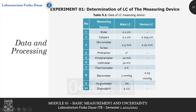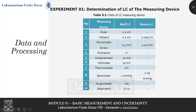For experiment 1, which is the determination of the least count of the measuring instrument, you will be given 10 measuring instruments whose list is in Table 5.1. From each measuring instrument, determine the main LC and nonius LC and write the values in the table. If the measuring instrument doesn't have a nonius scale, then just write a dash.